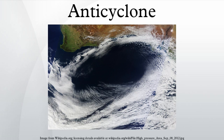Subtropical ridge: Heating of the Earth near the equator forces upward motion and convection along the monsoon trough or inter-tropical convergence zone. The divergence over the near-equatorial trough leads to air rising and moving away from the equator aloft. As air moves towards the mid-latitudes, it cools and sinks, leading to subsidence near the 30-degree parallel of both hemispheres. This circulation, known as the Hadley cell, forms the subtropical ridge. Many of the world's deserts are caused by these climatological high-pressure areas. Because these anticyclones strengthen with height, they are known as warm-core ridges.